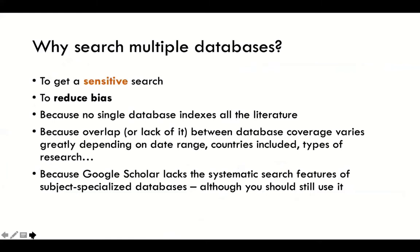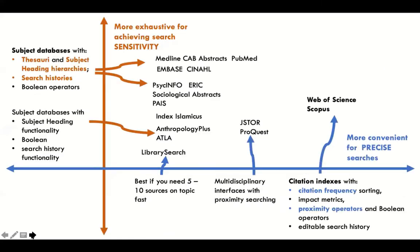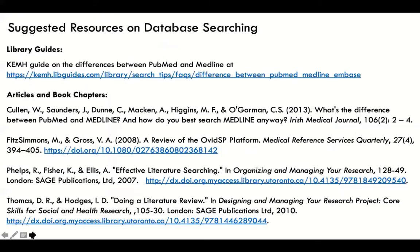So why do we search multiple databases? To reduce bias, get a more sensitive search — and here's another mapping of the databases that we have.